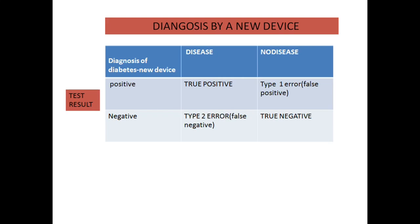We always have to compare the result with the gold standard — there will be two types of examination. Whatever result you get with your new test, you must compare it with the gold standard. Whatever the gold standard says is the ultimate truth. If you get positive and the gold standard says negative, that becomes false positive. If you get negative and the gold standard says positive, that becomes false negative error.